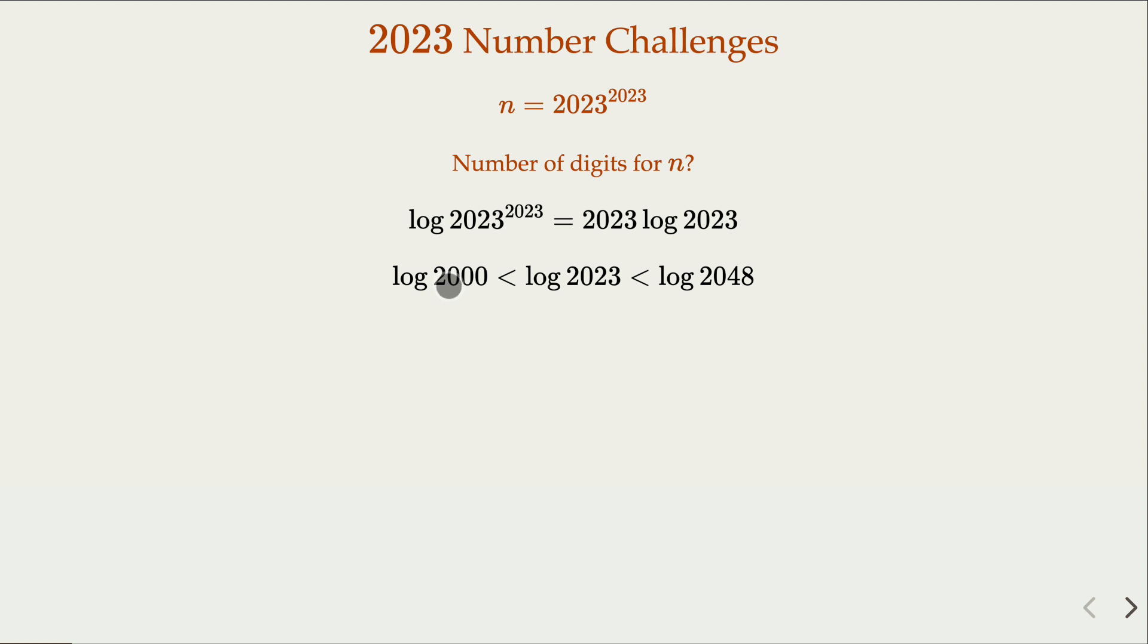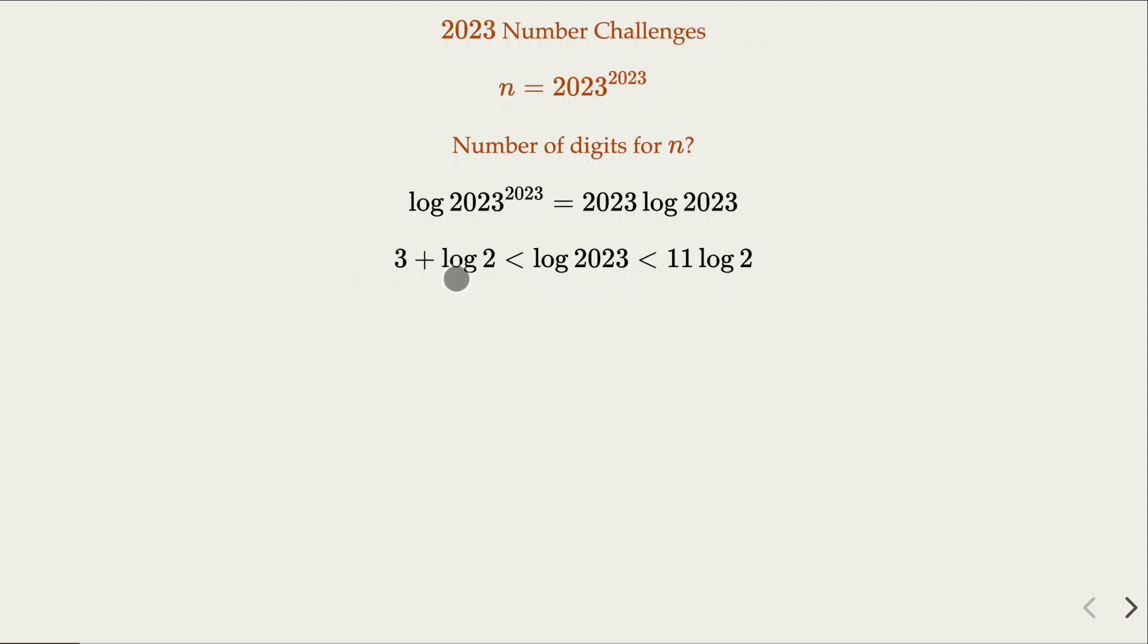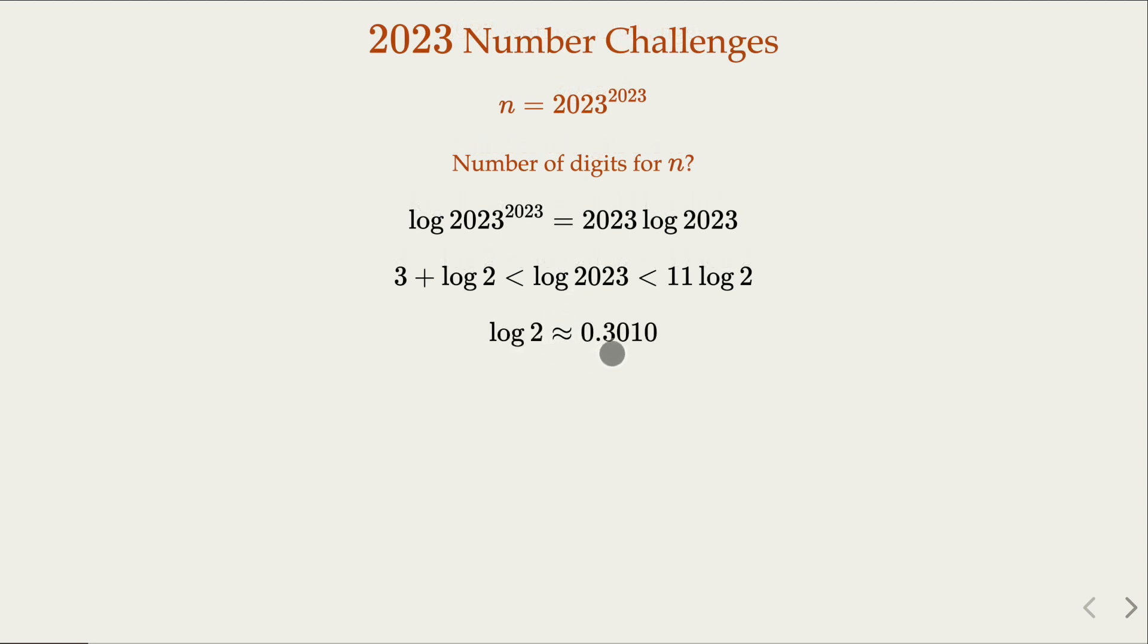How to estimate the range of 2023? It is bounded by 2000 versus 2048. The first one is 2 times 1000, the second one is 2 raised to 11th power. By the property of logarithm, you can rewrite this inequality as log 2 plus log 1000, which is 3, and this is 11 log 2. That's the value range for log 2023. We know that log base 10 of 2 is about 0.301.